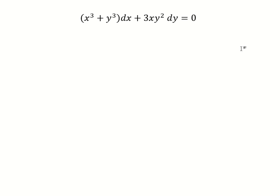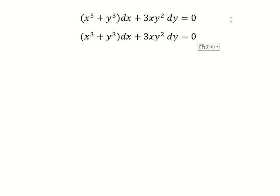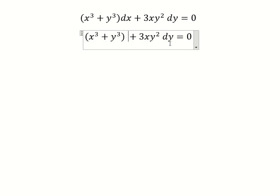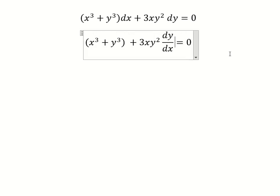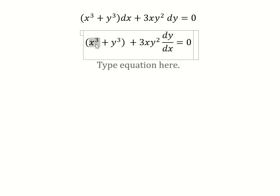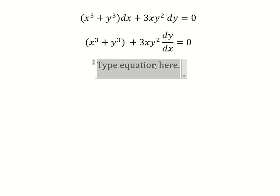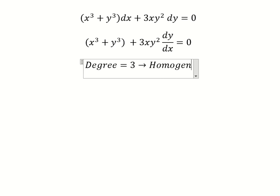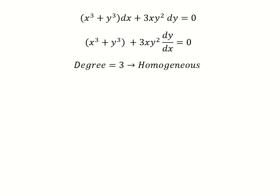Hello everybody. Today I want to show you how to answer this. We divide both sides by dx. Next we can see that we have s to the power of 3, y to the power of 3, and s times y to the power of 2. They are the same degree — number 3 — so this equation is homogeneous.